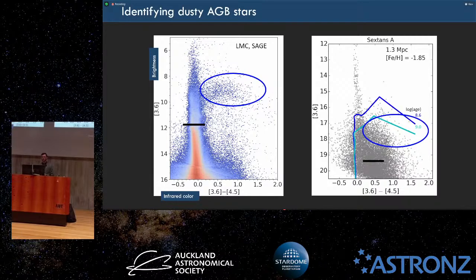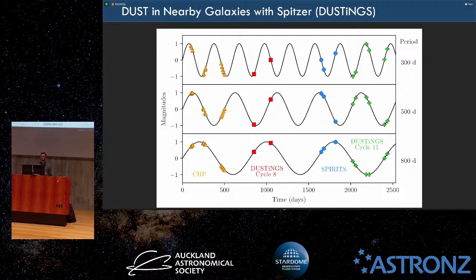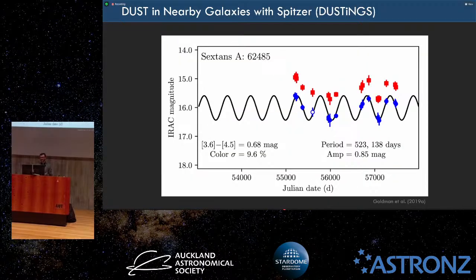One of the things we use is pulsation. These stars pulsate with really large pulsations — they change brightness quite dramatically, orders of magnitude. We used a bunch of data from the Spitzer Space Telescope and infrared telescopes to try to look for pulsating stars in a number of nearby metal-poor galaxies.